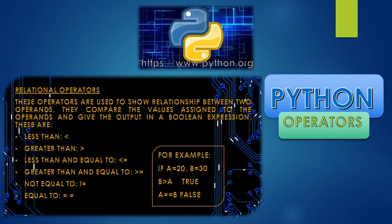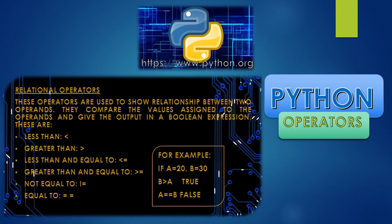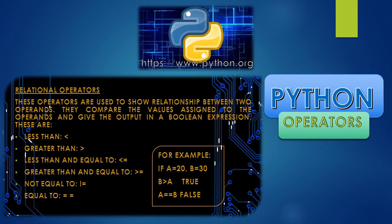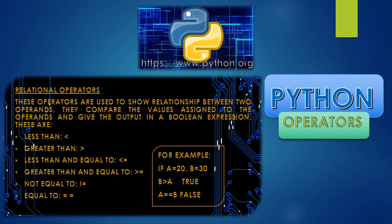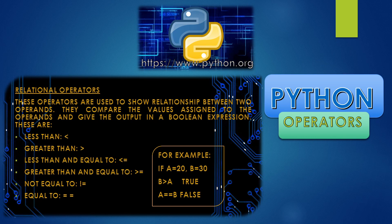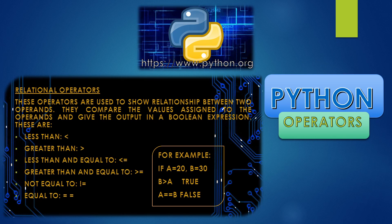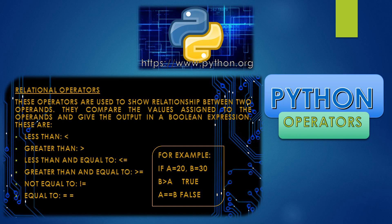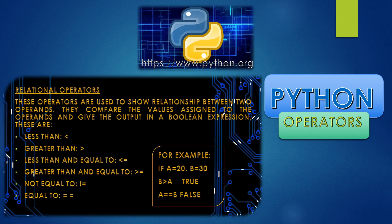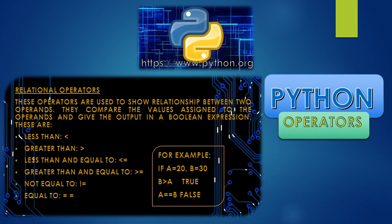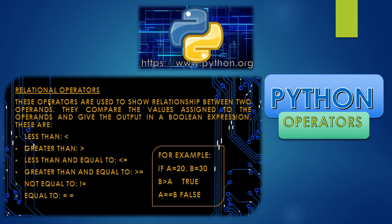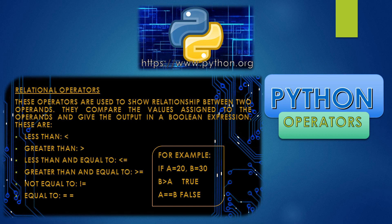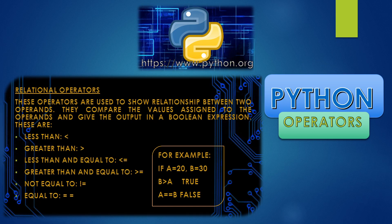In the next category, we talk about relational operators. As the name indicates, they establish the relationship between two operands and give output as a boolean expression — true or false. These operators are: less than, greater than, less than or equal to, greater than or equal to, not equal to, and equal to. For example, if a is 20 and b is 30, then b > a is true because 30 is greater than 20. And if we check a == b using double equal, since 30 and 20 are not equal, the statement is false.